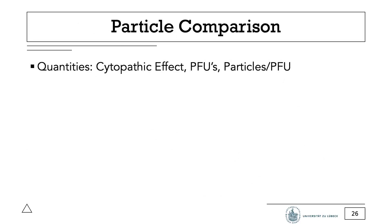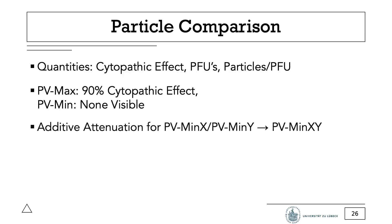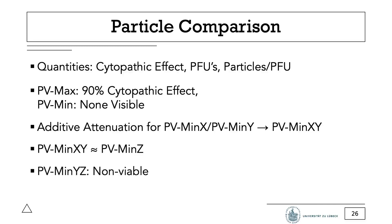To determine to what degree the genetic modification altered the translation efficiency, they transfected HeLaR19 cells with the viral RNAs and observed the cytopathic effect and plaque formation, as well as measuring the titer in plaque-forming units and in total virus particles per plaque. To measure the number of viral particles, they measured the optical absorption of the sample. They compared PVMin and PVMax with the wild-type and found that PVMax produced 90% of the wild-type cytopathic effect 24 hours after transfection in HeLaR19 cells, and created plaques of comparable size. So it was very similar to wild polio, while PVMin was unable to produce any visible cytopathic effect even after 96 hours. PVMin also did not result in any viable virus in the supernatant of transfected cells.